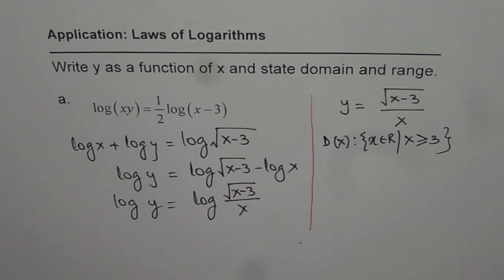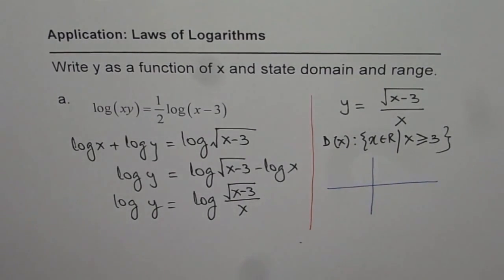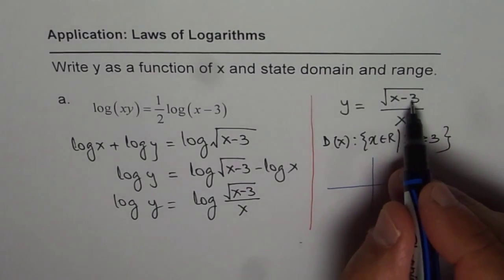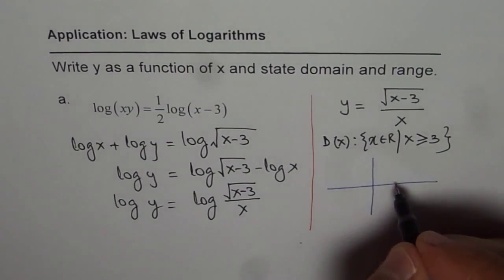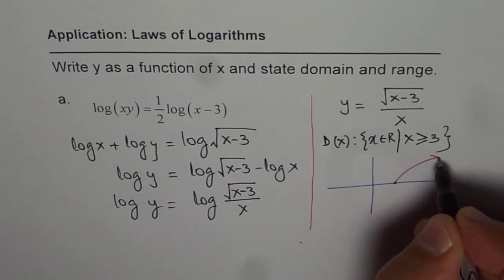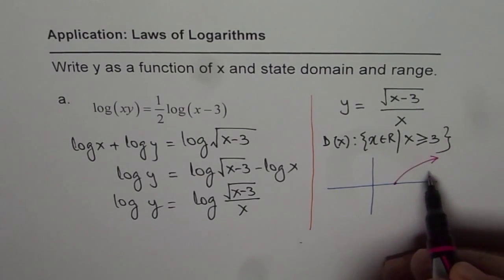what you can do is, you can sketch this. And so we have x minus 3, that square root function, just to give you an idea. So which is kind of like this. So square root function is translated 3 units to the right.